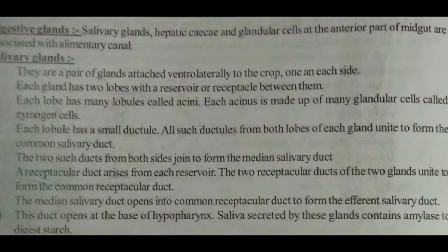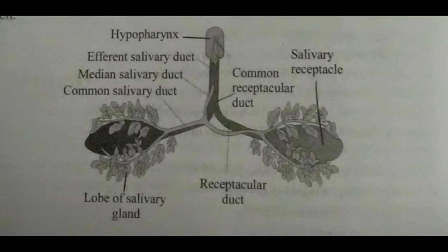The two common salivary ducts from both sides join to form the median salivary duct. A receptacular duct arises from each reservoir, and the two receptacular ducts of the two glands unite to form the common receptacular duct. The median salivary duct opens into the common receptacular duct to form the efferent salivary duct, which opens at the base of the hypopharynx. Saliva secreted by these glands contains amylase to digest starch. The diagram labels include: hypopharynx, efferent salivary duct, median salivary duct, common salivary duct, lobe of salivary gland, receptacular duct, common receptacular duct, and salivary receptacle.